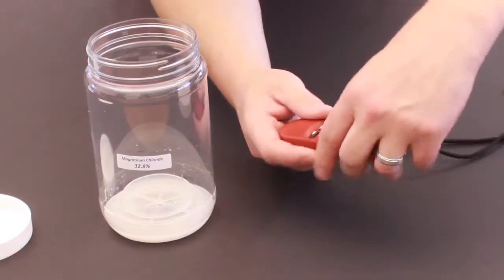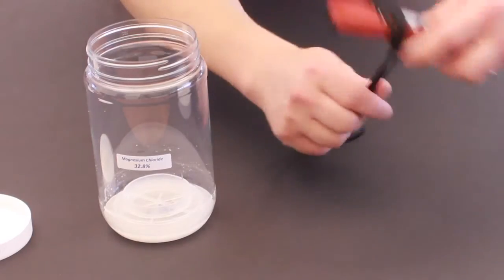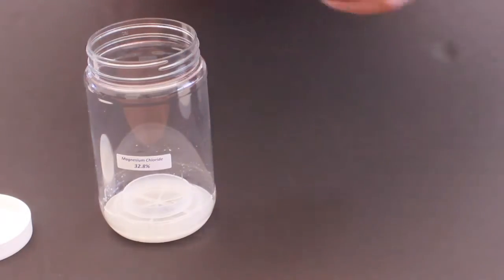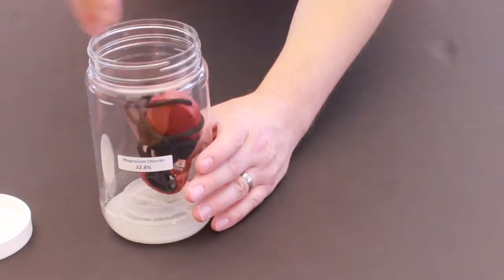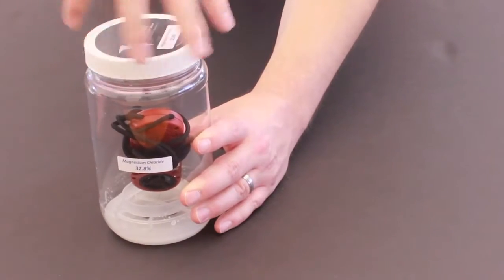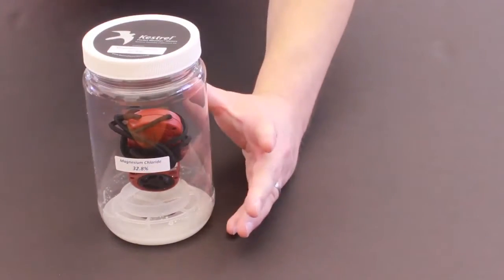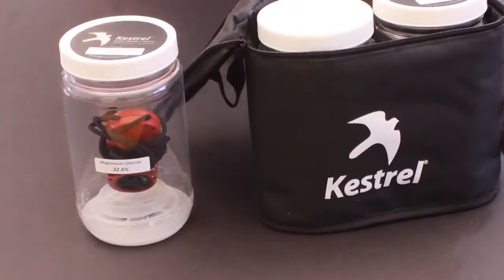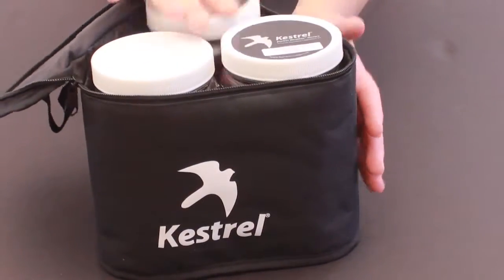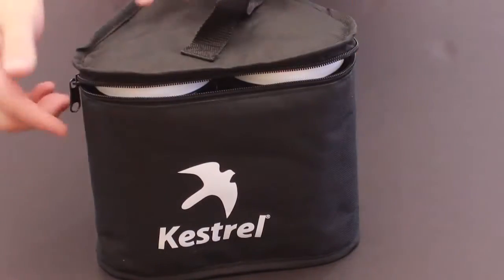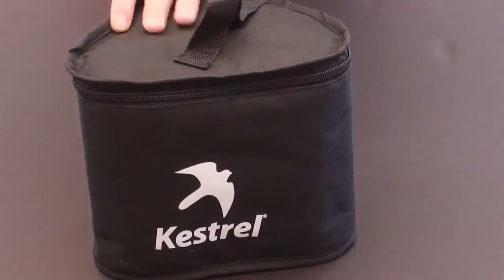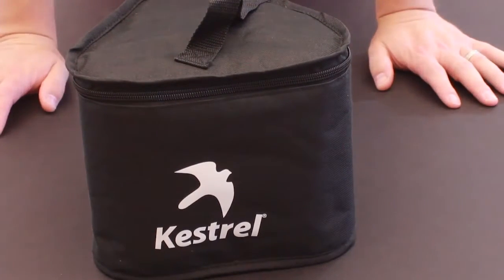We want to be careful to wrap the lanyard around so it doesn't touch the salts, and we're going to stick this upside down in this chamber and close the lid. Once the lid is closed, we want to put this back into our calibration kit and seal it up and set your timer for an hour.